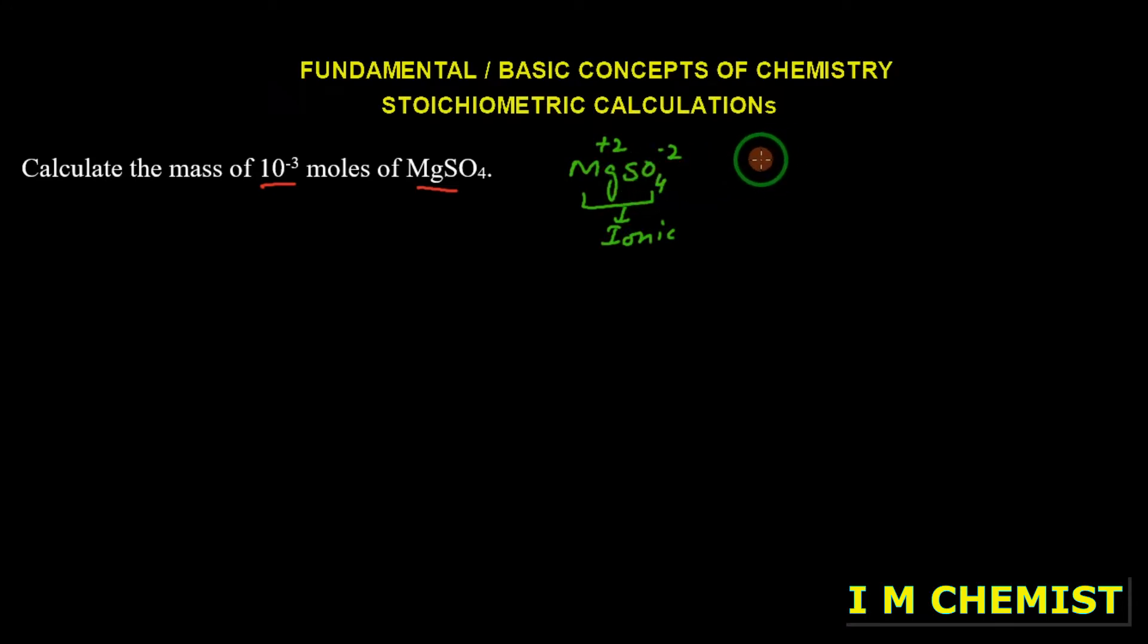Now we have to consider molecular mass. Molecular mass is considered for molecules. Magnesium sulfate is ionic in nature, so we will consider its formula mass or formula unit.